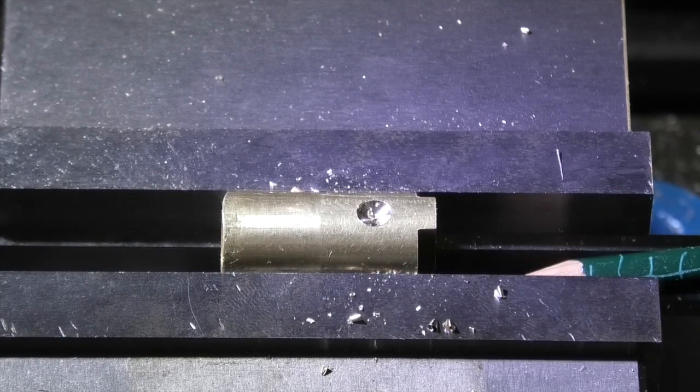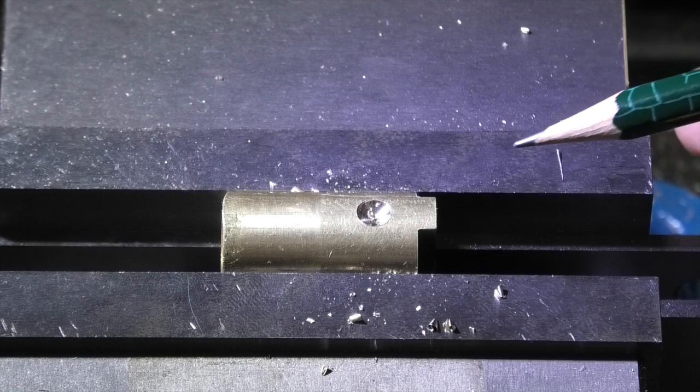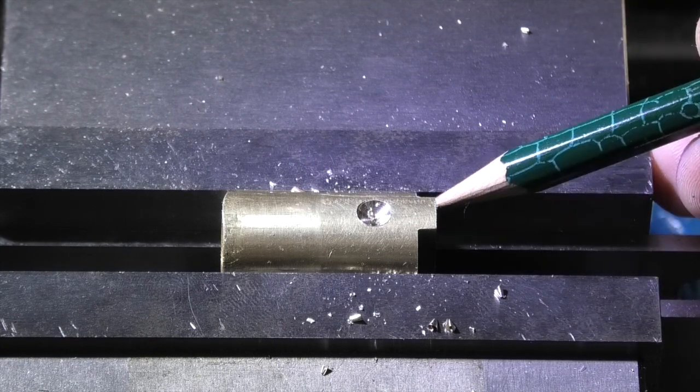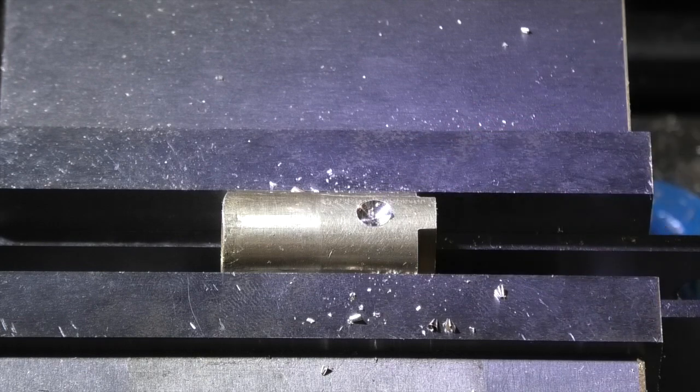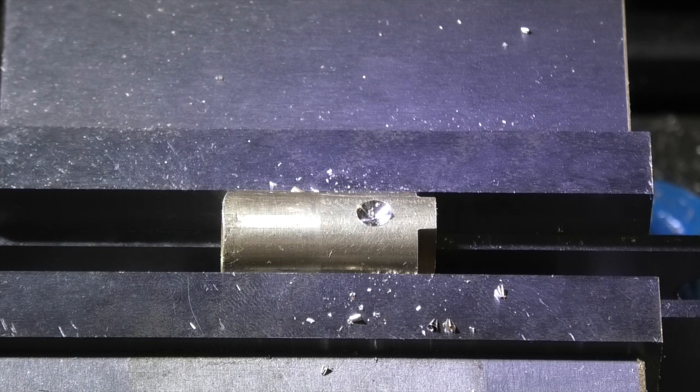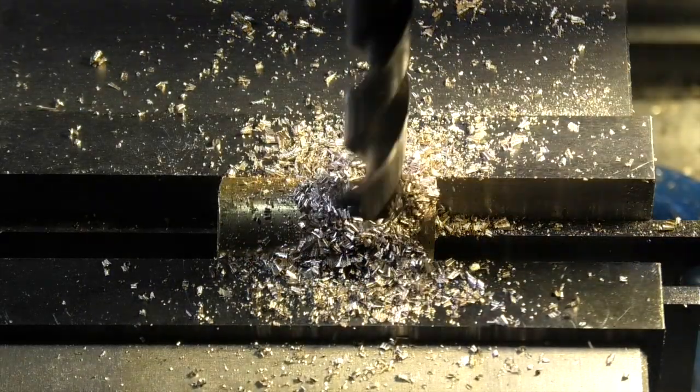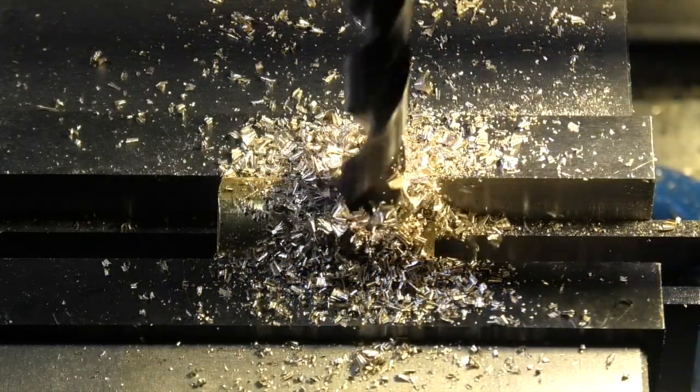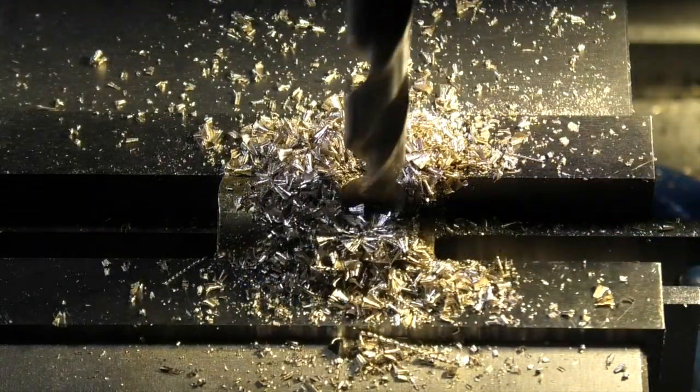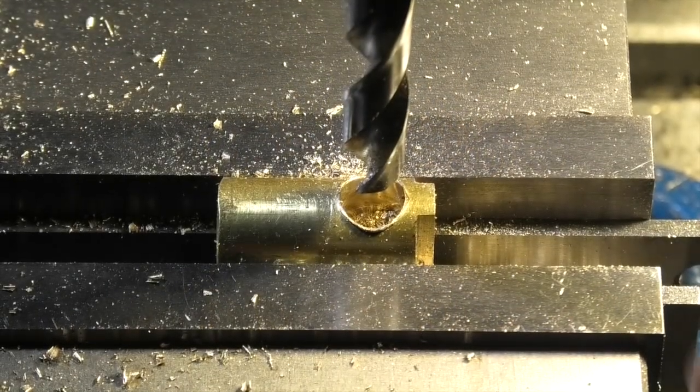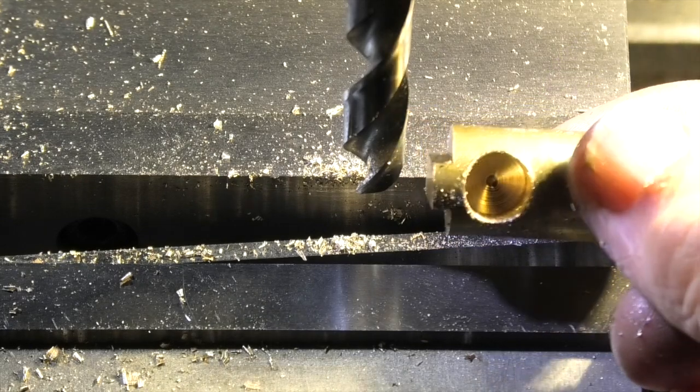I'll set this in the vise with two parallel strips just to locate it level. I've set this true just by using a slip gauge or a gauge block between the jaw and the face. I've got to the center between the two vise jaws and I've spot drilled. Now I need to drill the three-eighths hole.